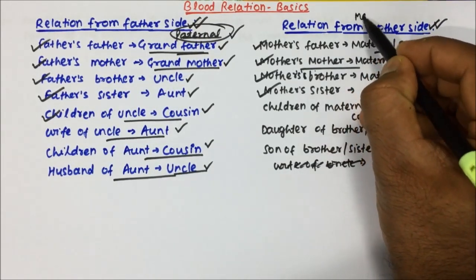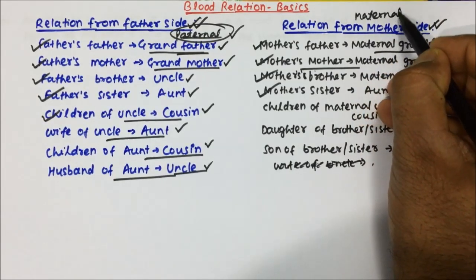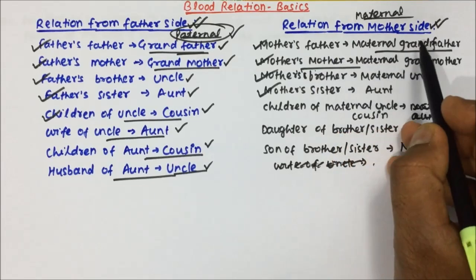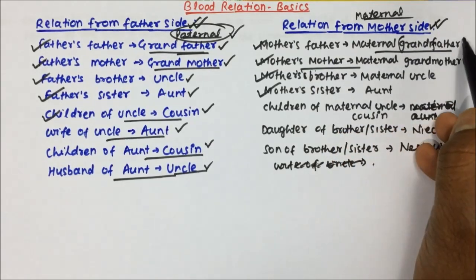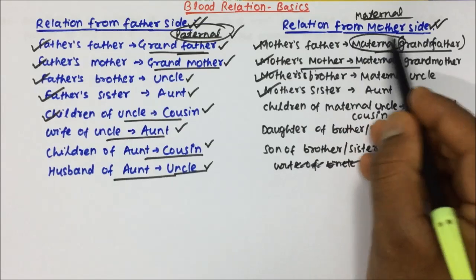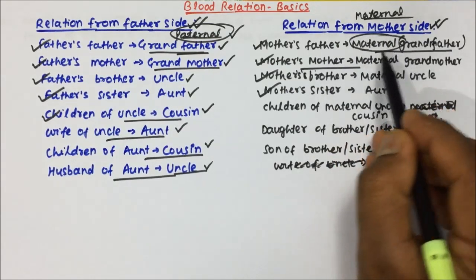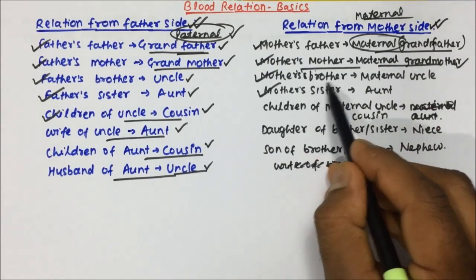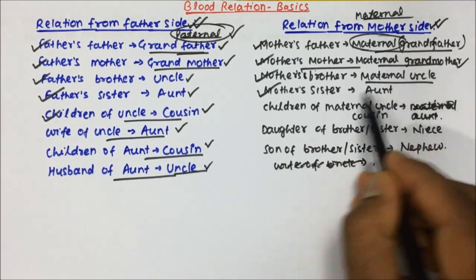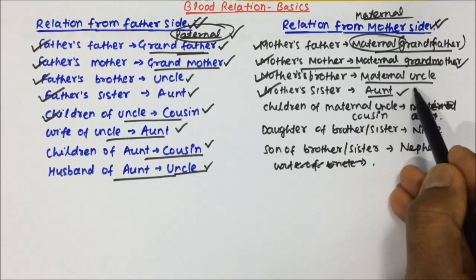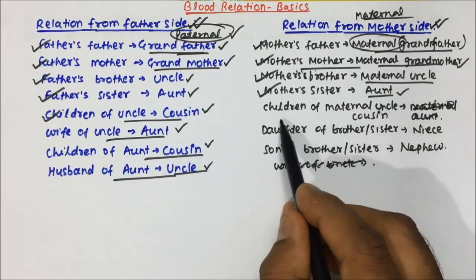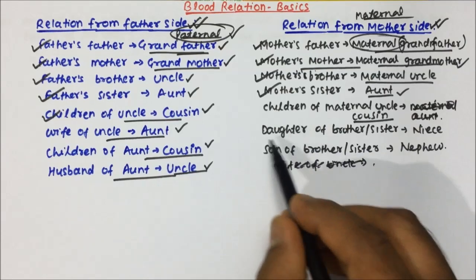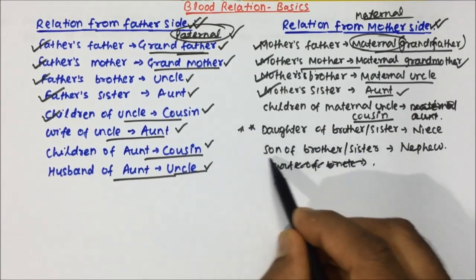From mother's side, it will be maternal — father's side is paternal, mother's side is maternal. Mother's father is also called grandfather, but to differentiate on mother's side we use 'maternal,' so mother's father will be maternal grandfather. Mother's mother will be maternal grandmother, mother's brother will be maternal uncle, and mother's sister will be aunt or maternal aunt.